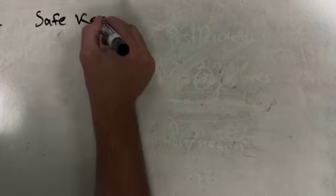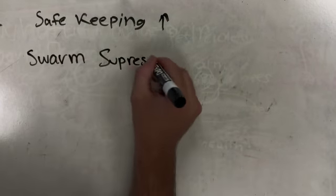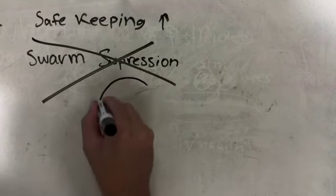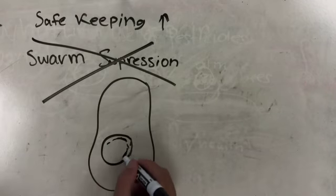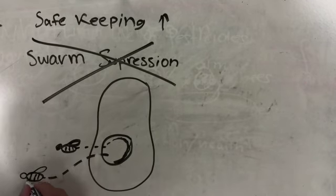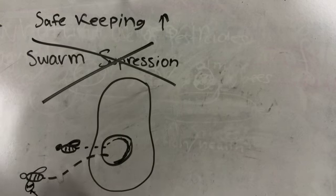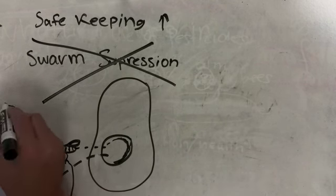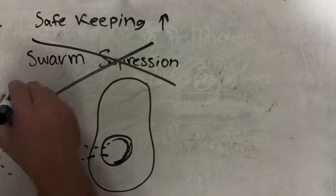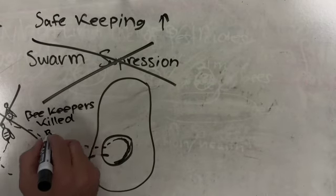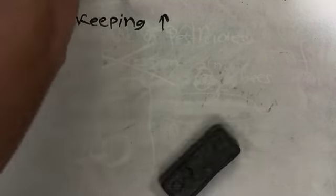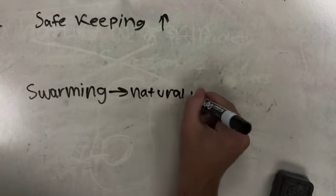Better safekeeping of bees: swarm suppression is a universal technique employed by most conventional beekeepers to prevent bees from leaving the hive and taking honey with them. It is not just wrong, but it has played a huge part in the decline of bees because swarming is a natural way for bee colonies to reproduce. It is their basic strategy for survival and for diversifying their gene pool.